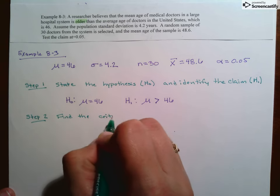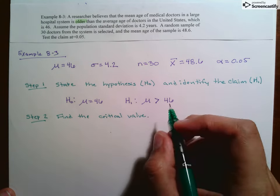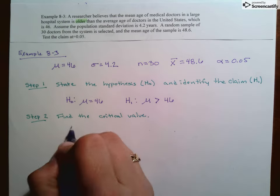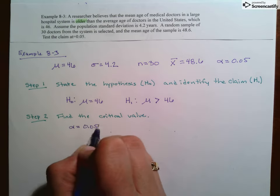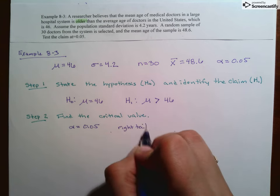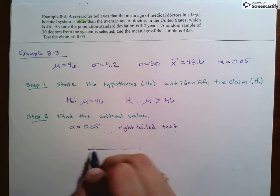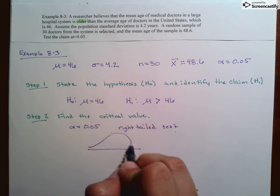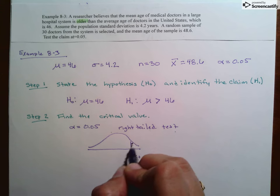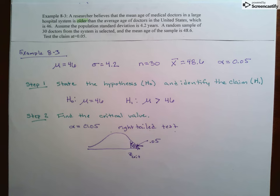Step two is going to be find the critical value. So here, alpha equals 0.05, and it's a right-tailed test. For our critical value, we're looking for the Z-score, this is Z-crit, so that this area out here is 0.05.